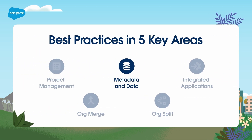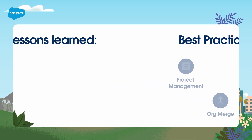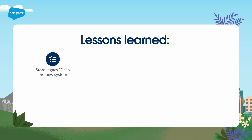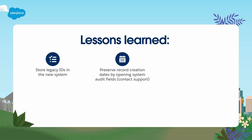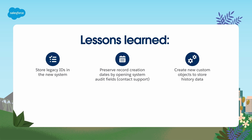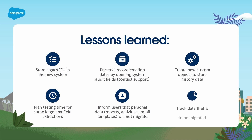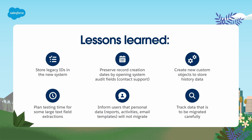When it comes to migrating data, it's important to know that not all data is migrated equally. Here are six key lessons about org migrations and what happens with different data types. First, be sure that you store legacy IDs in the new system — legacy IDs are old ID fields in the previous org, and to keep them you'll need to store them in a custom field. You can preserve record creation dates by opening system audit fields through contacting Salesforce support. One way to store history data and field history trail is to create new custom objects. You'll want to plan testing time for large text field extractions. Use your communication plan to inform users that personal data, reports, activities, and email templates will not migrate. Finally, think about carefully tracking data that you're going to migrate — what data needs to be migrated, what has already been migrated, and what still needs to be migrated.